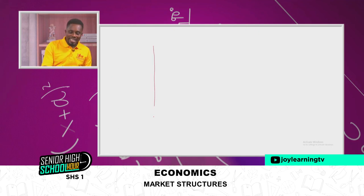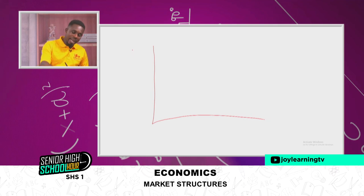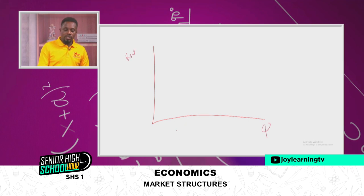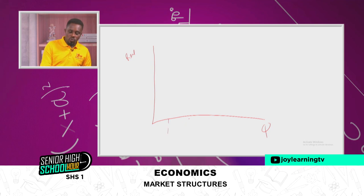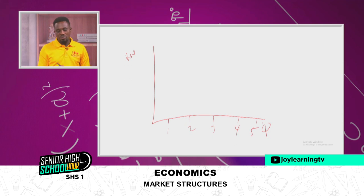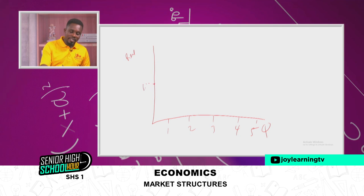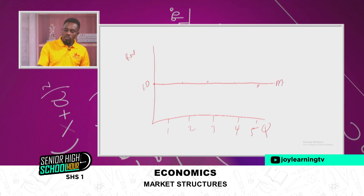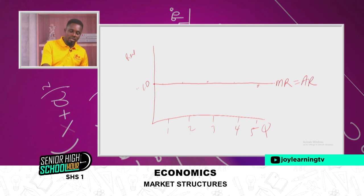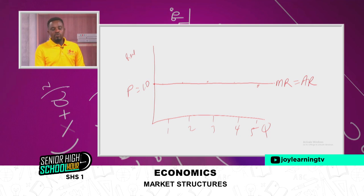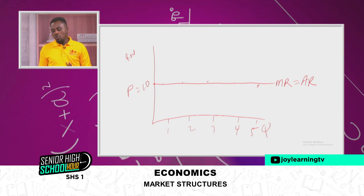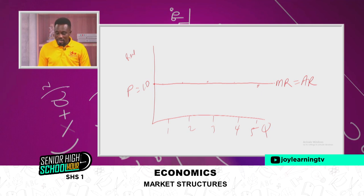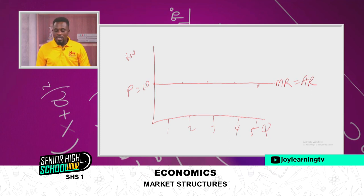Note that in the perfect competition market the price is equal to marginal revenue and it is equal to average revenue. In a diagram with revenue on the vertical axis and output on the horizontal axis, from output 1, 2, 3, 4, 5, and beyond, we all have 10 as our revenue — whether marginal revenue, average revenue, or price. When we join these points together we get a horizontal line. We can call this the MR curve, which is the same as the AR curve and the same as the price. The perfect competition market has its MR curve the same as the AR curve, and it is parallel to the output axis.